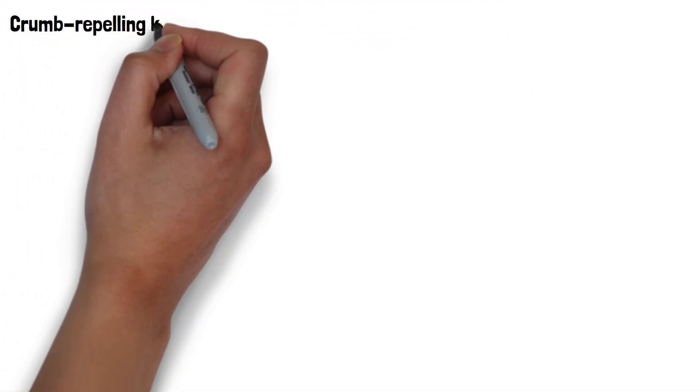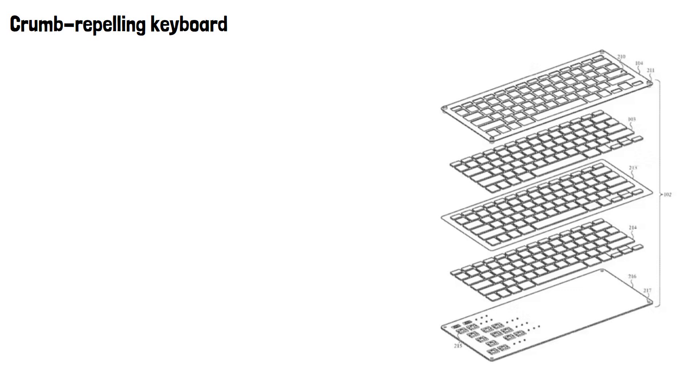Next, let's look at the crumb-repelling keyboard. If you spend a lot of time at a desk, you'll probably eat there at least sometimes too. This keyboard patent features two separate systems to prevent crumbs getting under and around the keys.